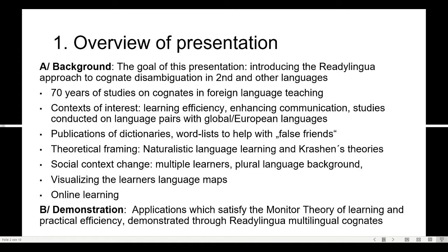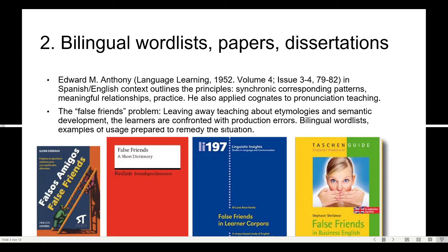There have been lots of bilingual wordlists prepared. If you look at slide two, there are some illustrations to help learners who have difficulties with the so-called false friends or cognates, which can be good friends or false friends.